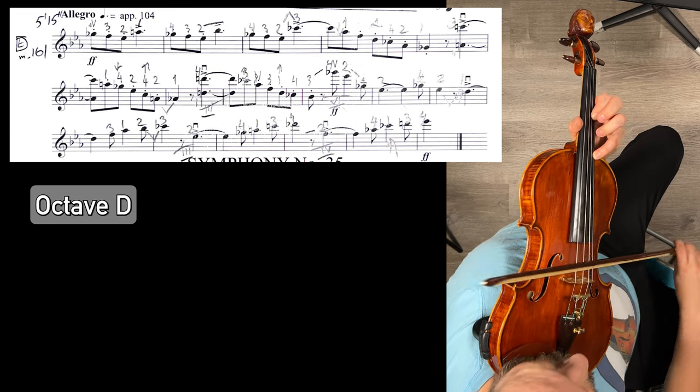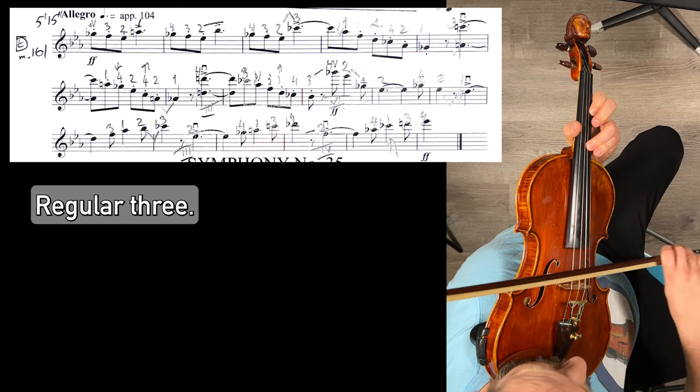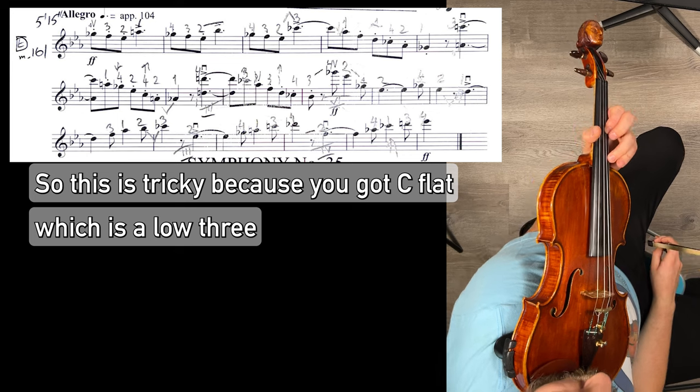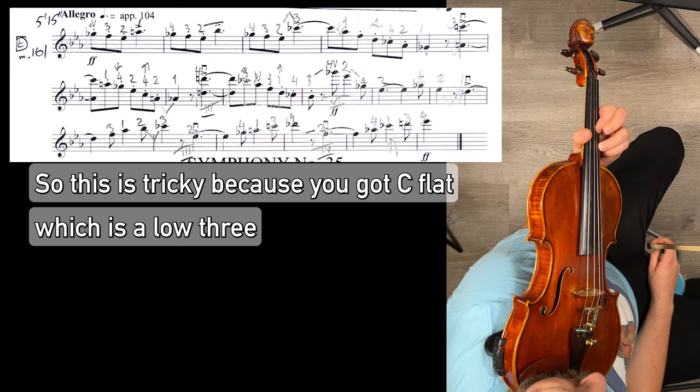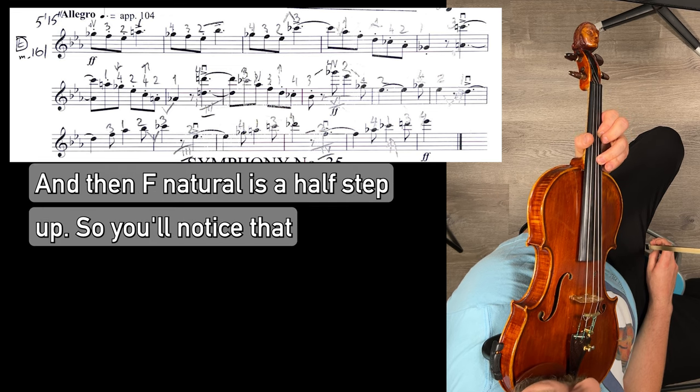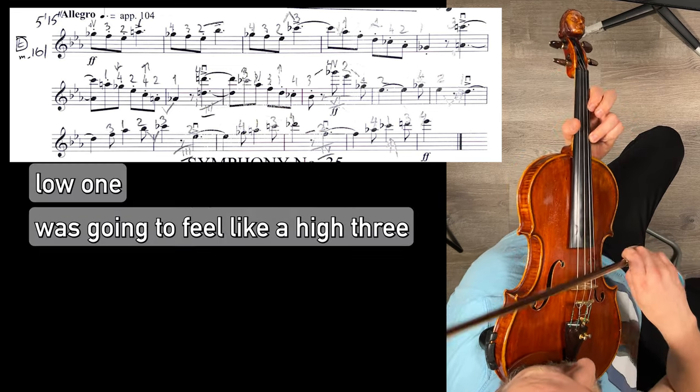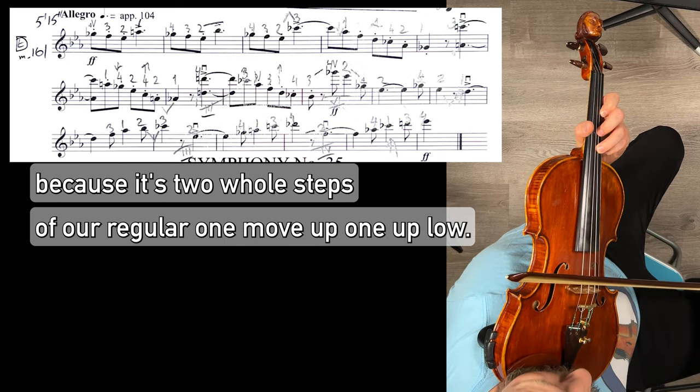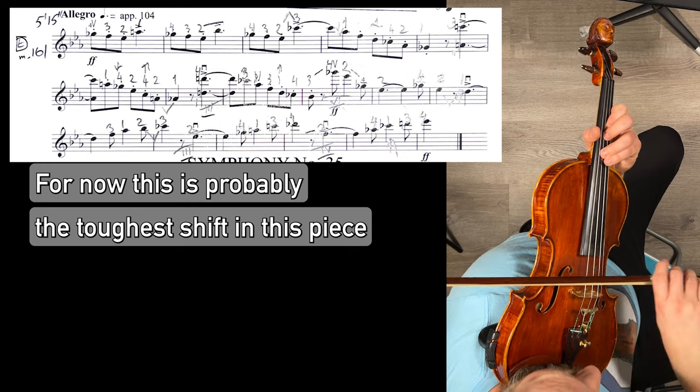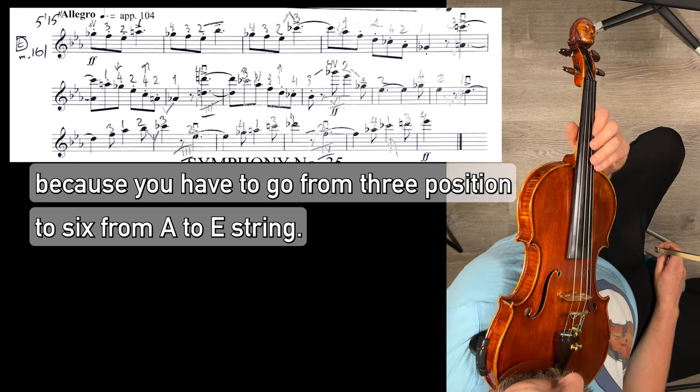High one. Third position. Octave D. Low three. Low one. Regular three. Regular one. Low four. Low three. So this is tricky because you've got C flat which is a low three, and then a regular low three on the A string. So C flat is a B natural, and then F natural is a half step up. So you'll notice that. Low three. Low one. It's going to feel like a high three because it's two whole steps apart. Regular one. Move up. One up. Low four.